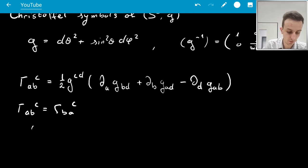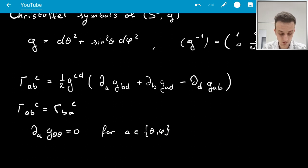I should also note that ∂_A G_θθ is 0 for A equals either theta or phi, so both indices will give me 0.